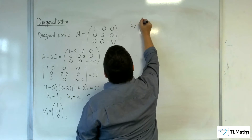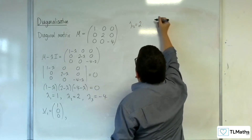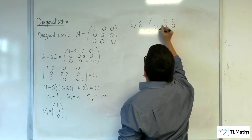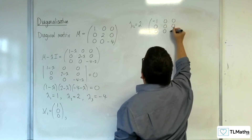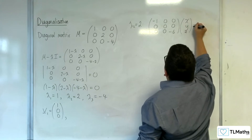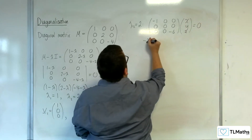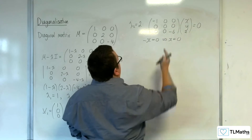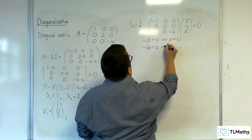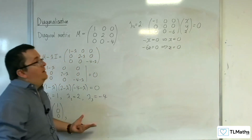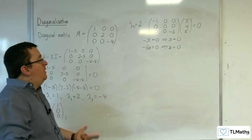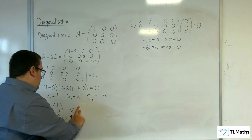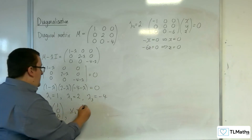For λ₂ = 2, our matrix is (-1, 0, 0), (0, 0, 0), (0, 0, -6), applied to (x, y, z) equals 0. We get -x = 0 so x = 0, nothing from the middle row, and -6z = 0 so z = 0. y can be any non-zero value, so our eigenvector for λ₂ is (0, 1, 0).